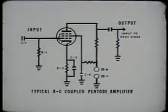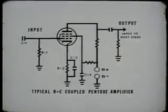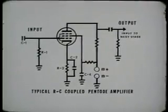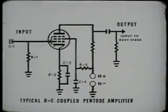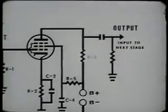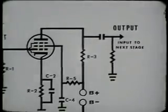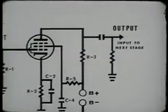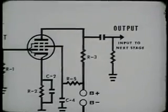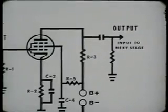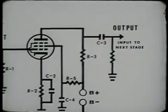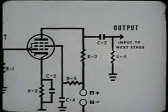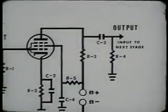C4 is the screen bypass capacitor, which serves to remove any variation in screen current from the B-plus voltage and to bypass these variations to ground. R5 is used as a screen dropping resistor; its value depends upon the potential at which the screen must operate. R3 is the plate load resistor for the tube; its value depends on the function of this amplifier and the type of tube used. The larger the value of the load, the lower the voltage on the plate. C3 is the output coupling capacitor for the tube and the input to the following stage. R4 is the second stage grid resistor and performs the same function as resistor R1.